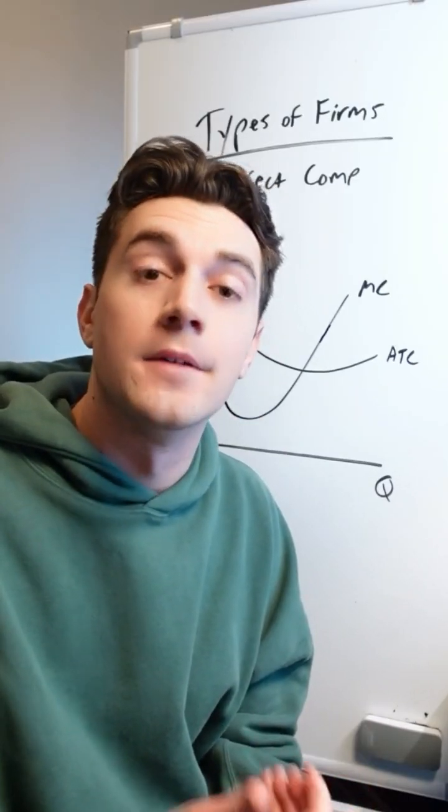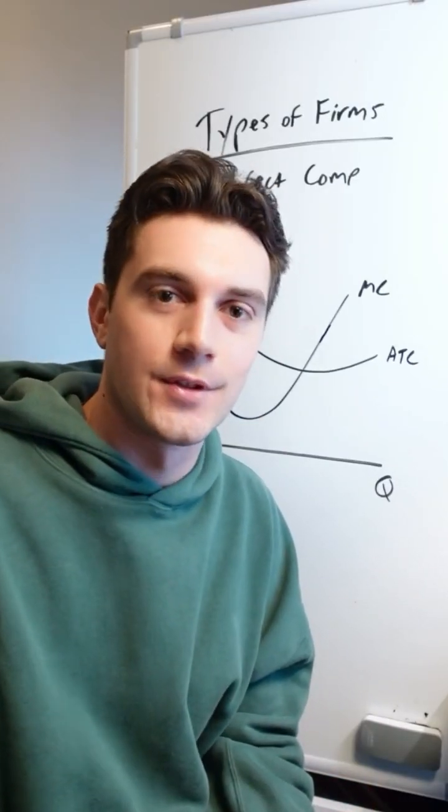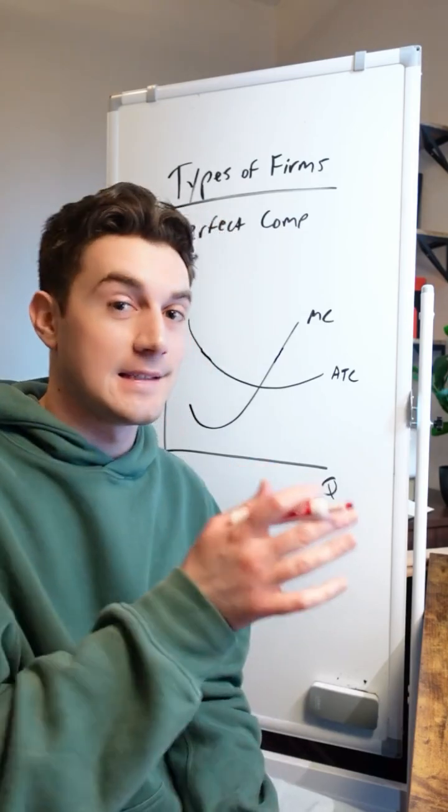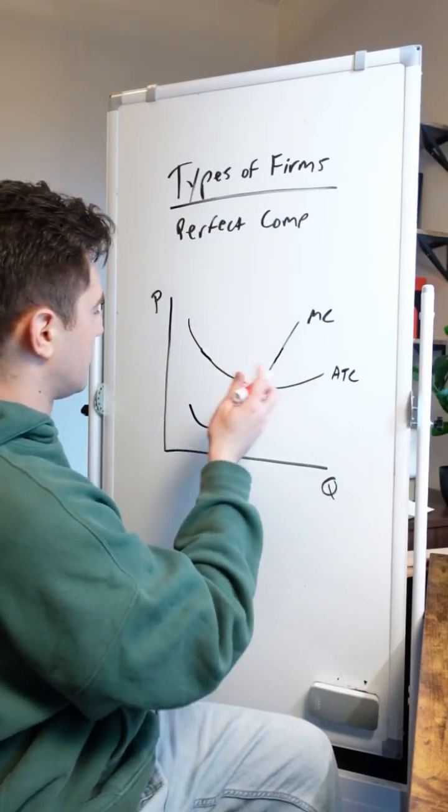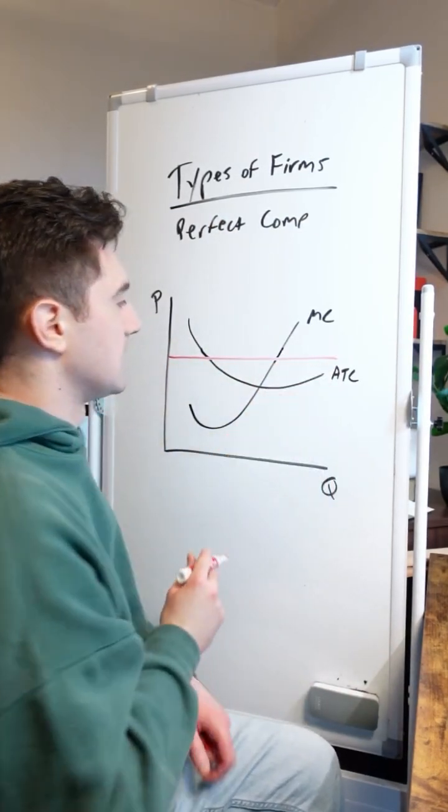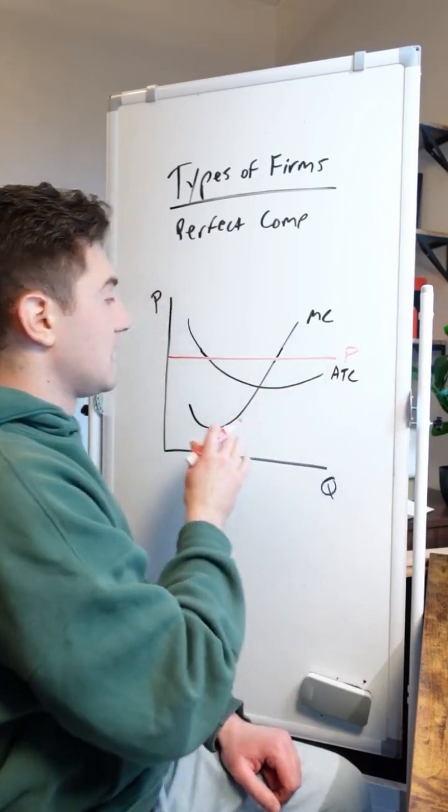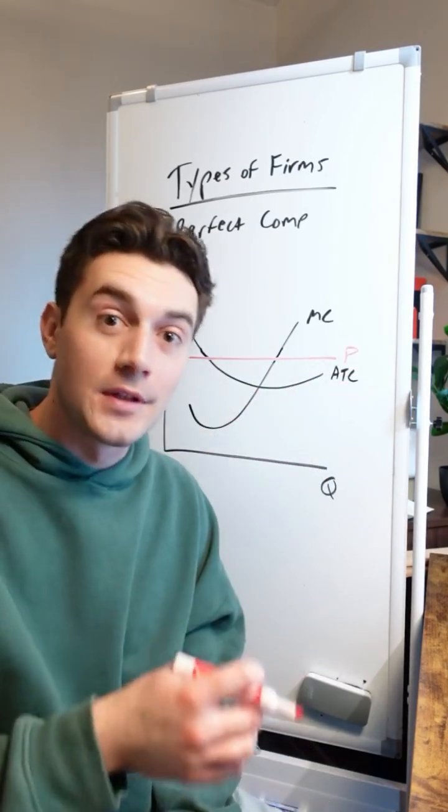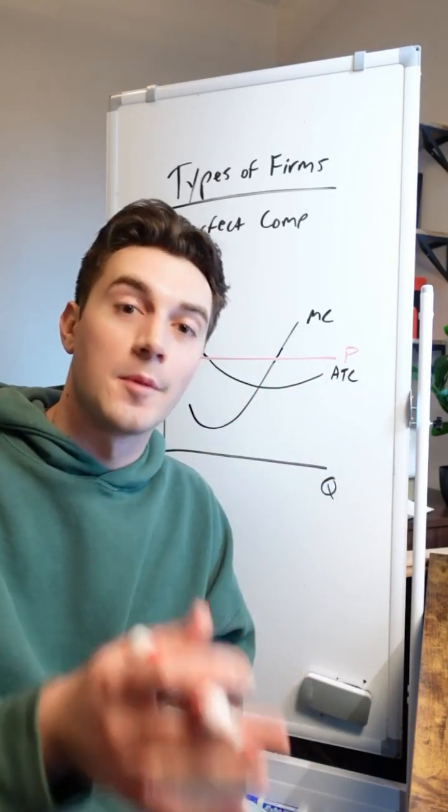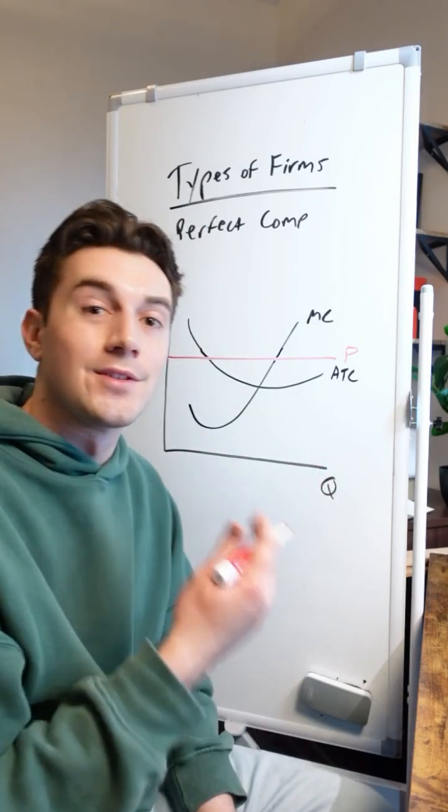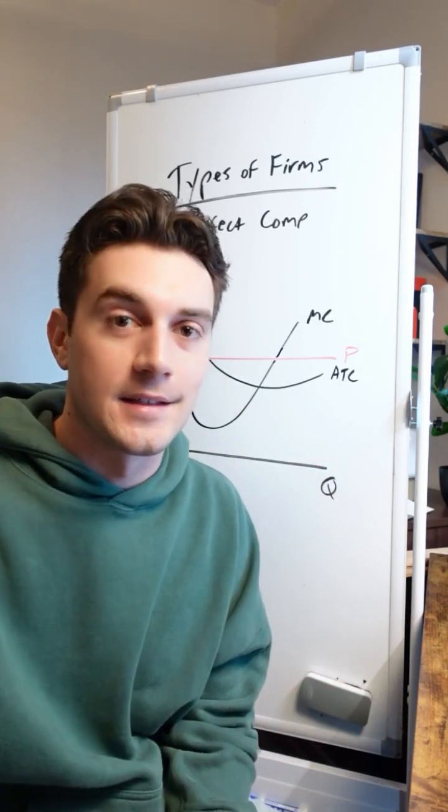It all comes down to perfectly competitive firms being price takers. They've got to accept the price that's set by the market, which in this case lies right here. I'll label this line P because this is the price that perfectly competitive firms have to take from the market, no matter how many units they're selling or outputting on the x-axis.